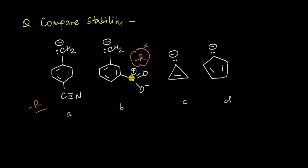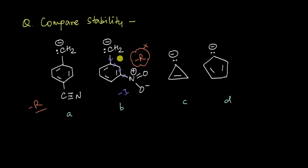In fact, NO2 is also an electron withdrawing group via induction, so the more important effect will be the minus-I of NO2 — it can withdraw electrons across sigma bonds via induction. So therefore, between A and B, because the cyano group is helping in delocalizing this negative charge further via resonance while NO2 can at best only pull some electron density away via induction, A is going to be much more stable compared to B.